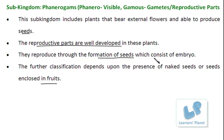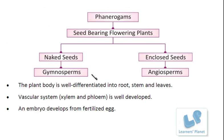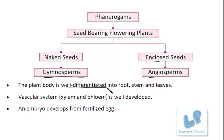Depending on whether seeds are present as a naked structure or enclosed inside fruits, plants are further sub-classified. Seed bearing plants with naked seeds belong to the division Gymnosperms, and if the seeds are enclosed, they belong to Angiosperms. In common, these plants have well differentiated body parts — well developed root system, shoot system, stems, and leaves — and the vascular system comprised of xylem and phloem tissue is also well developed. The embryo always develops from the fertilized egg, which is one characteristic feature of Phanerogams.